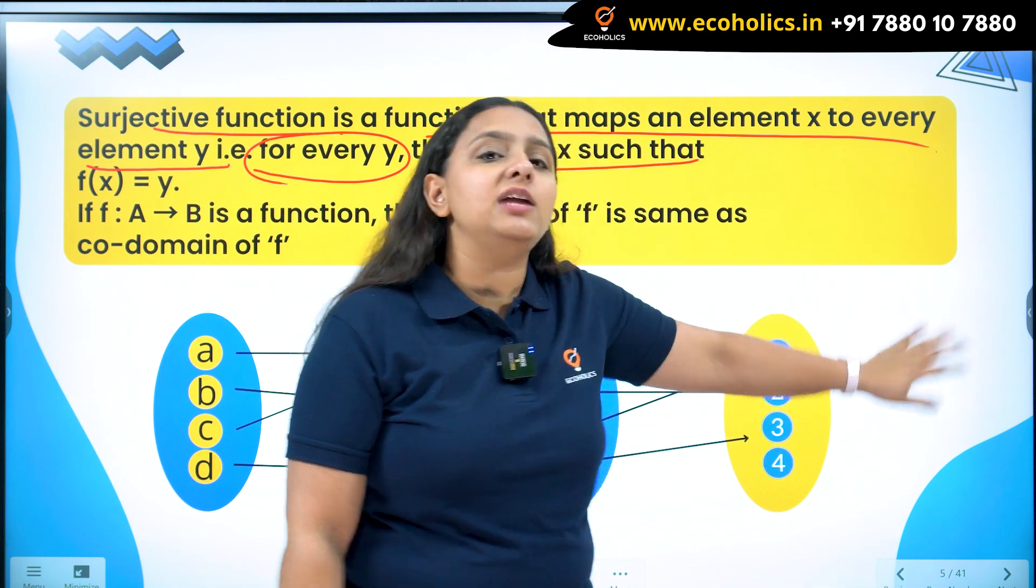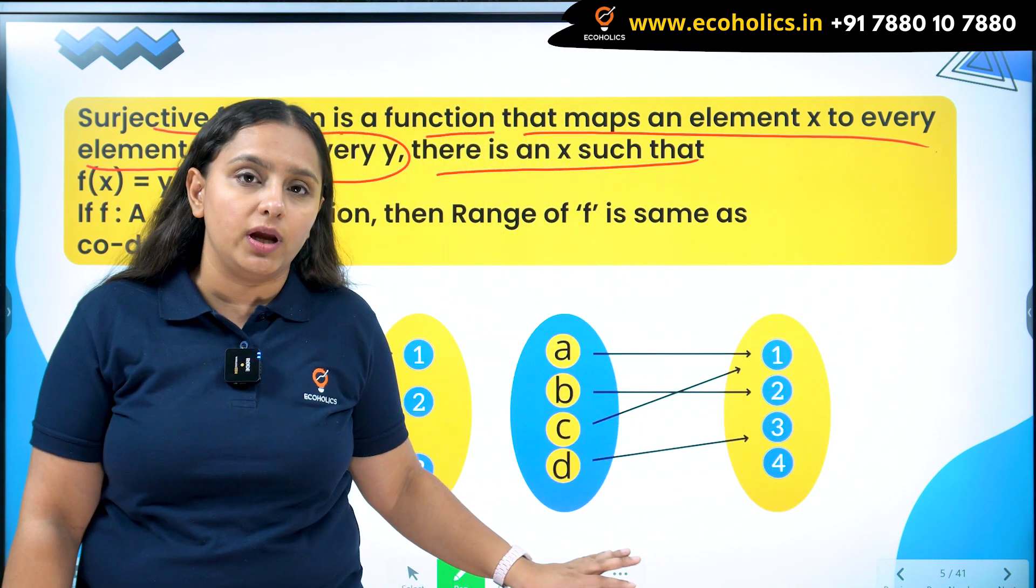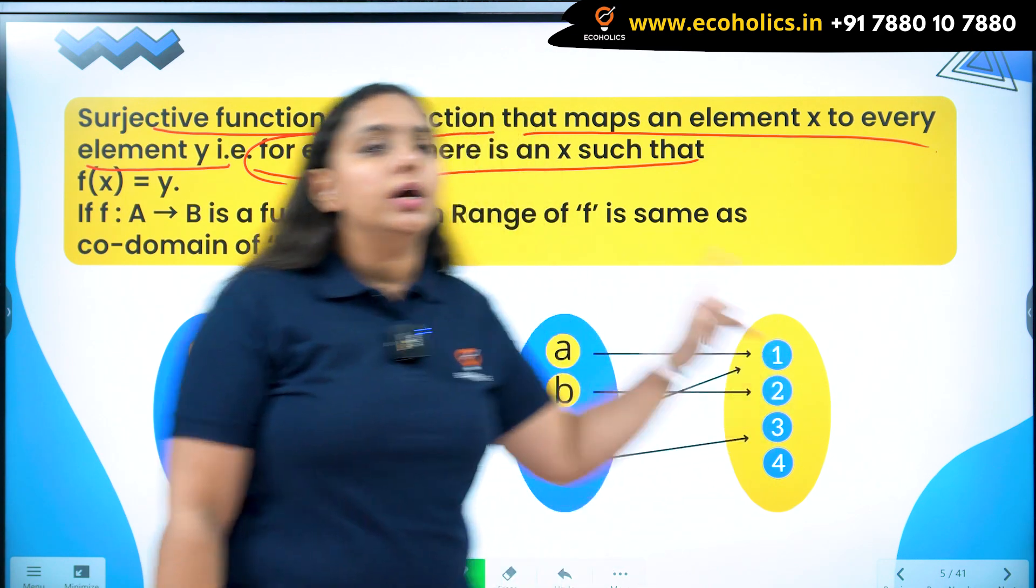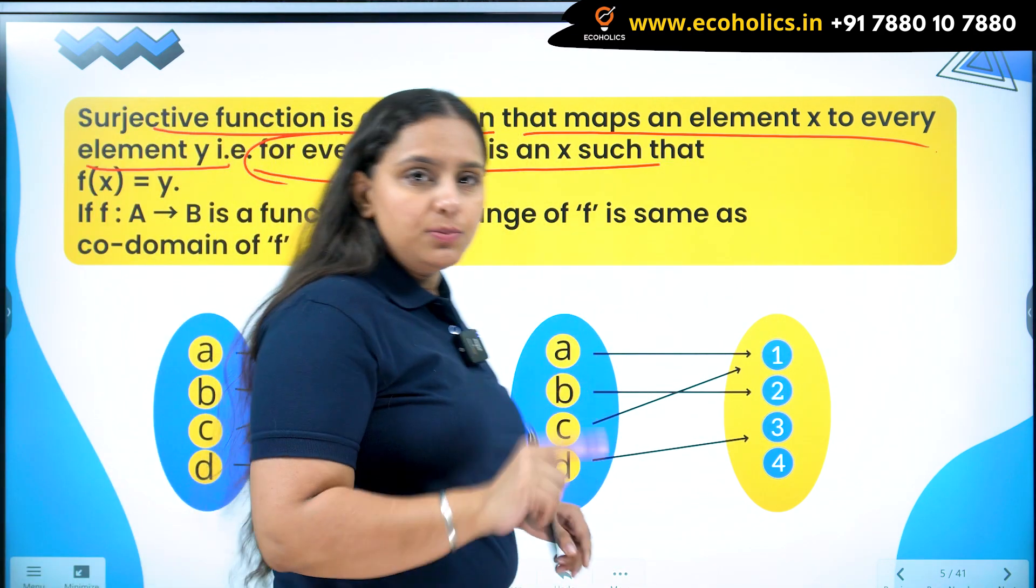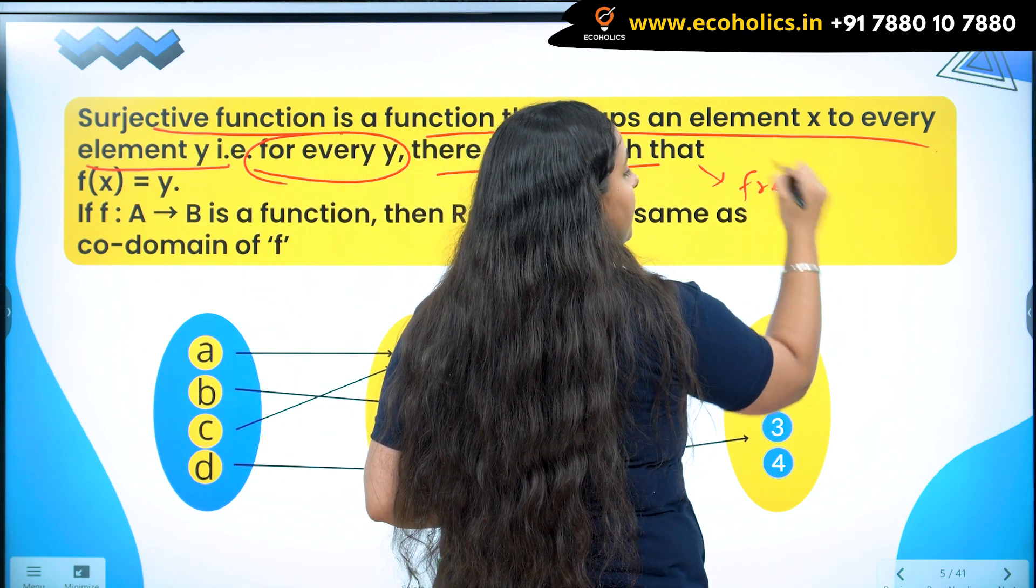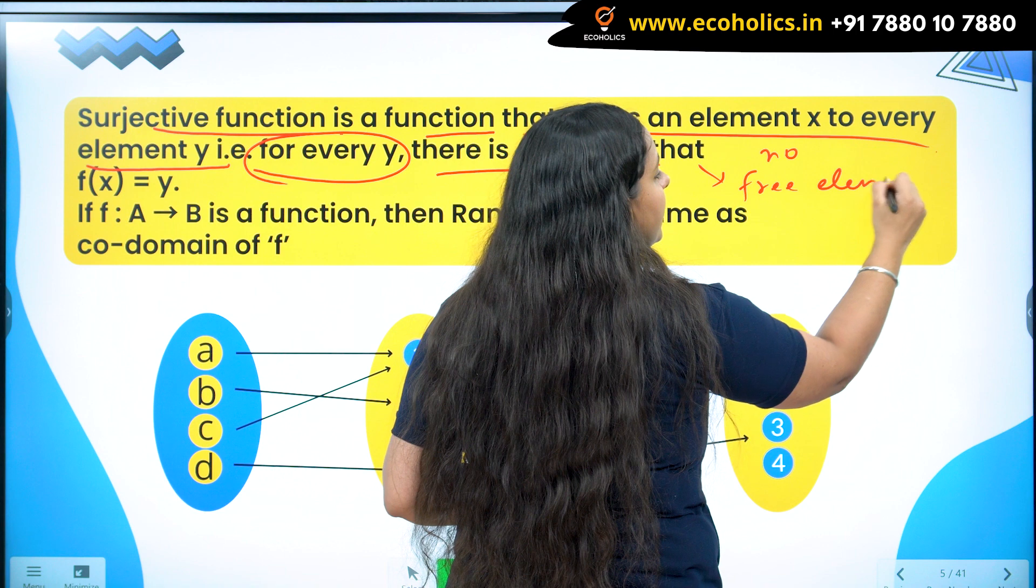For every y, every element present in my co-domain should have a pre-image in the domain. That is, for every element lying in the set of co-domain, I should have an element allotted to it in the domain. In very simple words, I should not have any free element in co-domain.